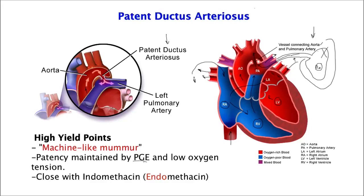The only disease pathology when you want to keep the PDA open is in patients with transposition of the great vessels, where the aorta and the pulmonary artery have been transposed on top of each other. You need the patent ductus arteriosus to allow some oxygenated blood to reach the rest of the tissues. But the treatment otherwise is indomethacin — very important to know that for the board exam.